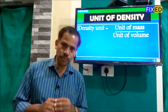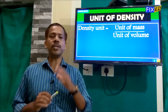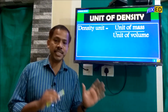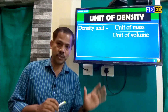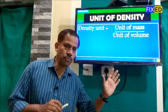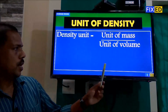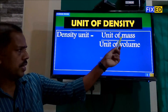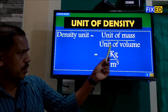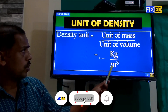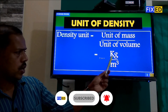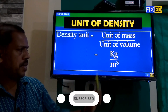The unit of density is equal to mass by volume — the unit of mass divided by unit of volume. Mass unit is kilogram divided by volume unit of meter cube, so the unit of density is kilogram per meter cube.